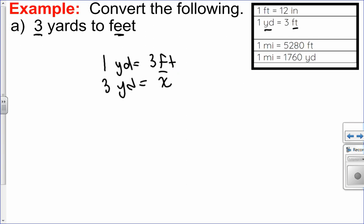And then all I have to do is cross multiply and divide. So three times three divided by one will equal x. Well, three times three is nine divided by one is nine. So x is equal to nine, which means that three yards is the same as nine feet.